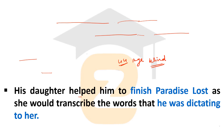His daughter helped him to finish Paradise Lost. Because he became completely blind at the age of 44 in 1652, his daughter would transcribe the words he dictated to her, and through her help he was able to complete the epic poem Paradise Lost.